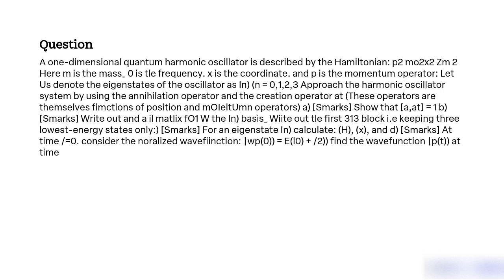What is the objective of approaching a one-dimensional quantum harmonic oscillator system using the annihilation and creation operators, demonstrating their commutation relationship, writing out a matrix a and a† in basis |n⟩, calculating H, x, and p for an eigenstate |n⟩, and finding the wave function at time t for a given normalized wave function at time t equals zero?